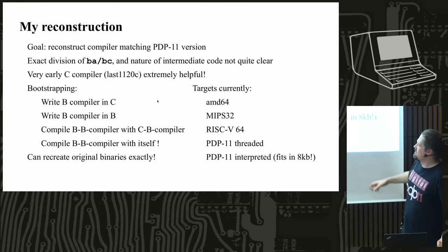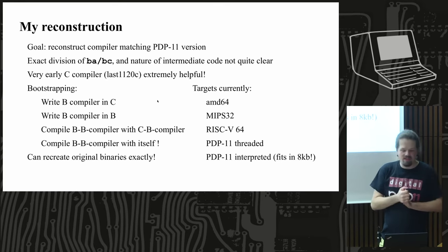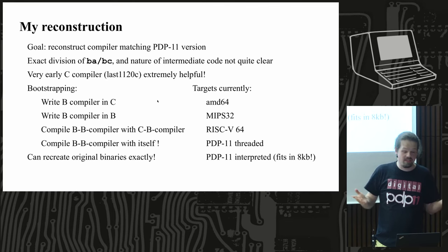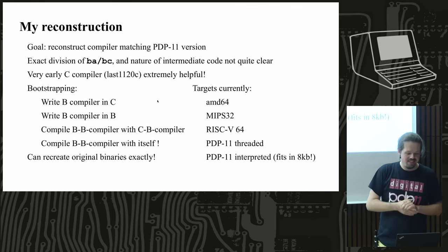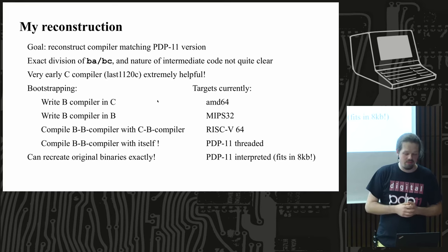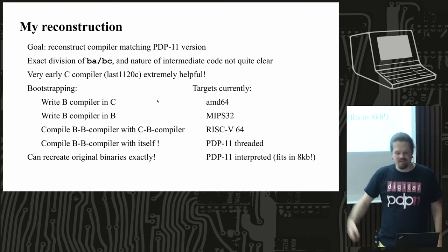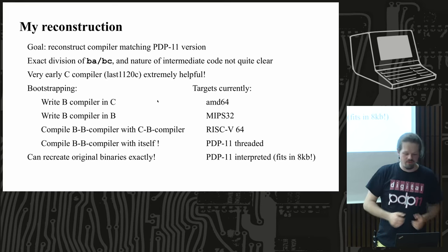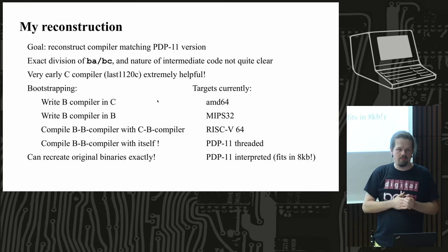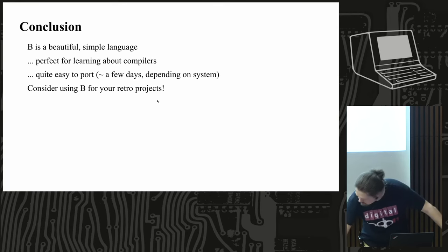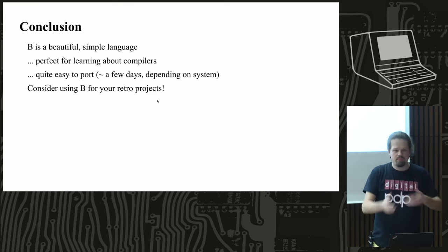I succeeded in fitting it into 8 kilobytes, and it works — the compiler can compile itself. The bootstrapping of a compiler is a very fun exercise. First I wrote a B compiler in C, then I wrote a new B compiler in B, compiled it with the C-based B compiler, then compiled the B-in-B compiler with itself — that closes the loop. It can recreate the original binaries I found exactly.